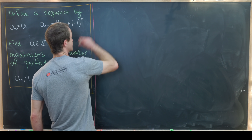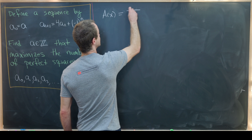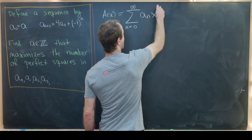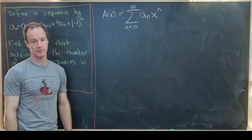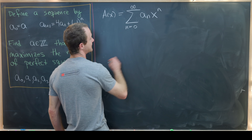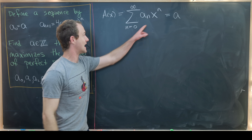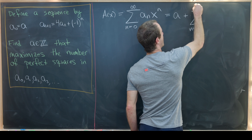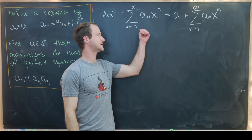Let's see what this generating function will look like. I'm going to define a function A(x) to be the sum as n goes from 0 up to infinity of a_n x^n. I'll take out the 0th term so that I can apply the recursion to the rest of the terms. Taking out the 0th term gives a_0, which is a times x^0 = 1, plus the sum as n goes from 1 up to infinity of a_n x^n.